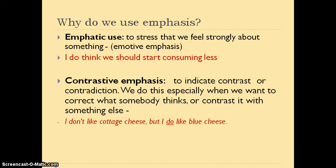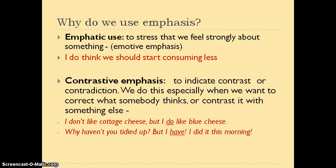We can also use emphasis to contrast information and indicate a contradiction. We do this especially when we want to correct what someone thinks or contrast two facts. For example, 'I don't like cottage cheese, but I do like blue cheese' — we're expressing a contrast. Or: 'Why haven't you tidied it up?' 'But I have. I did this morning.' We're contradicting what the other person says, correcting them. Bear in mind that this contrastive emphasis is often used with connectors like 'however', 'but', or 'although', which strengthen the contrast.